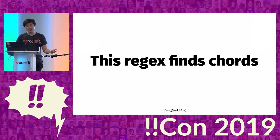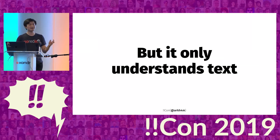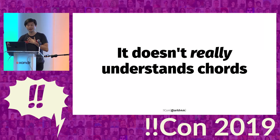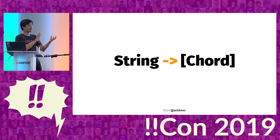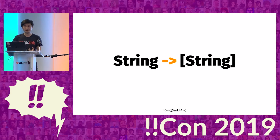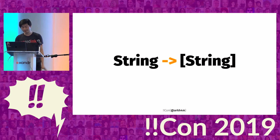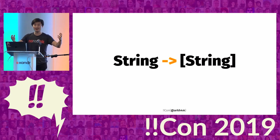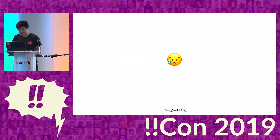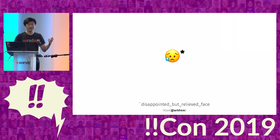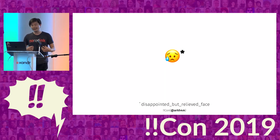The problem is that, as a regular expression, it only understands text. So it doesn't really understand chords. What I wish I could have is something that takes a string and finds these real chords. But what the regular expression does is find a string and return me another set of strings, saying I think there are chords inside there — but you have to distinguish what's the difference between A minor and B major. This makes me very sad. Fun fact: in the Unicode standard, this emoji's name is 'disappointed but relieved face' — and that's how I feel, because I'm disappointed with regular expressions, but I'm relieved they don't really work properly, because otherwise I couldn't have written this talk.